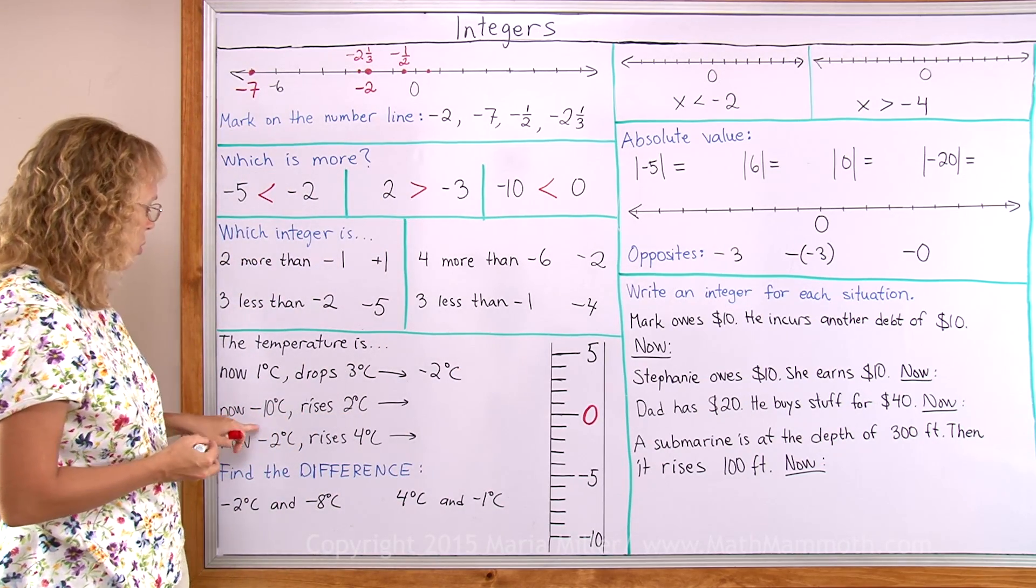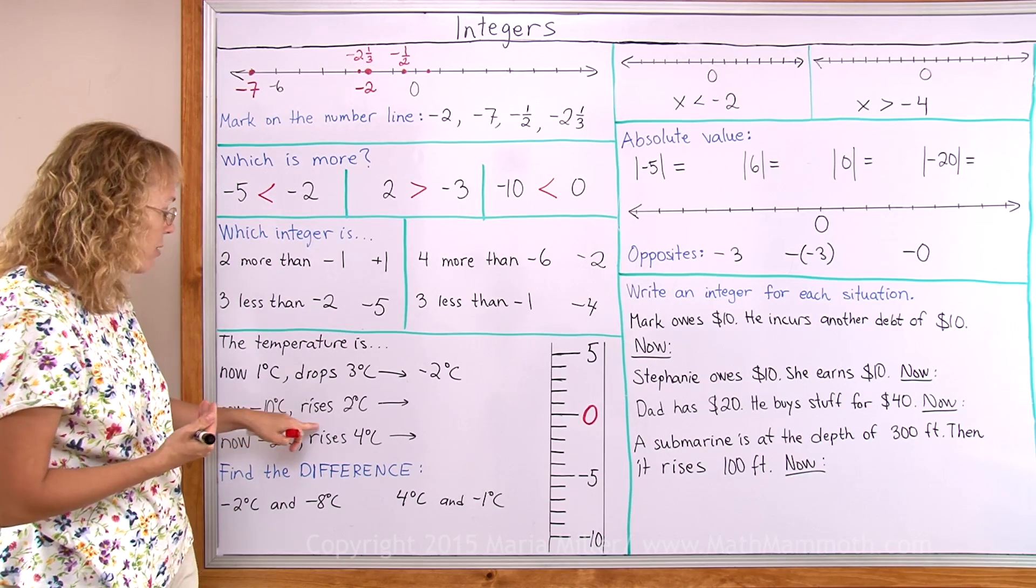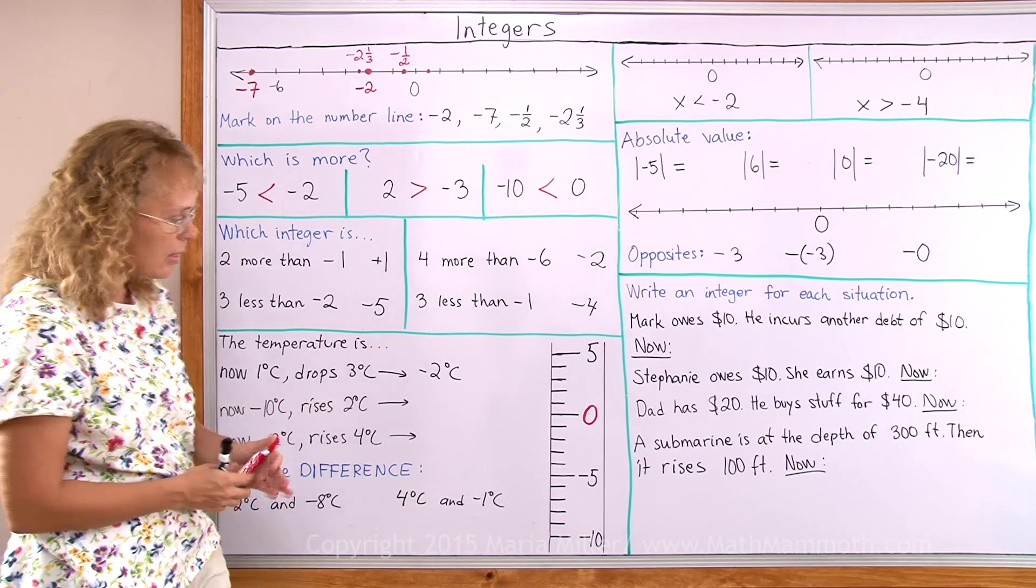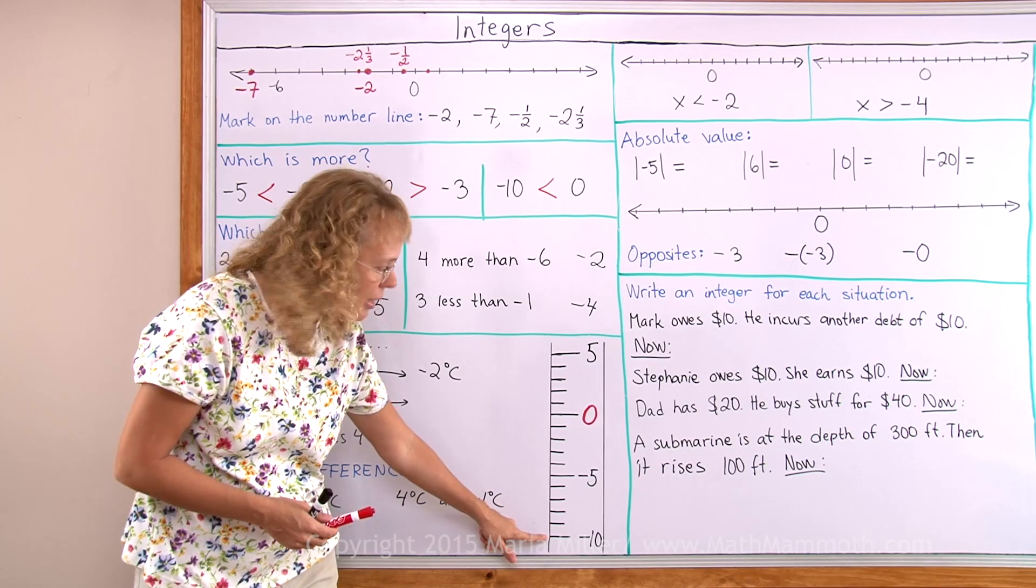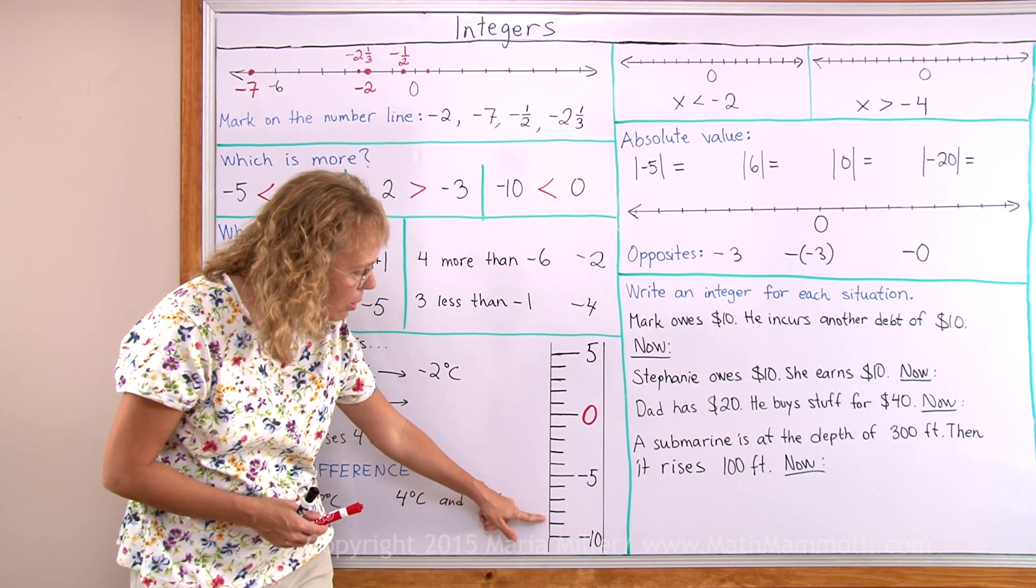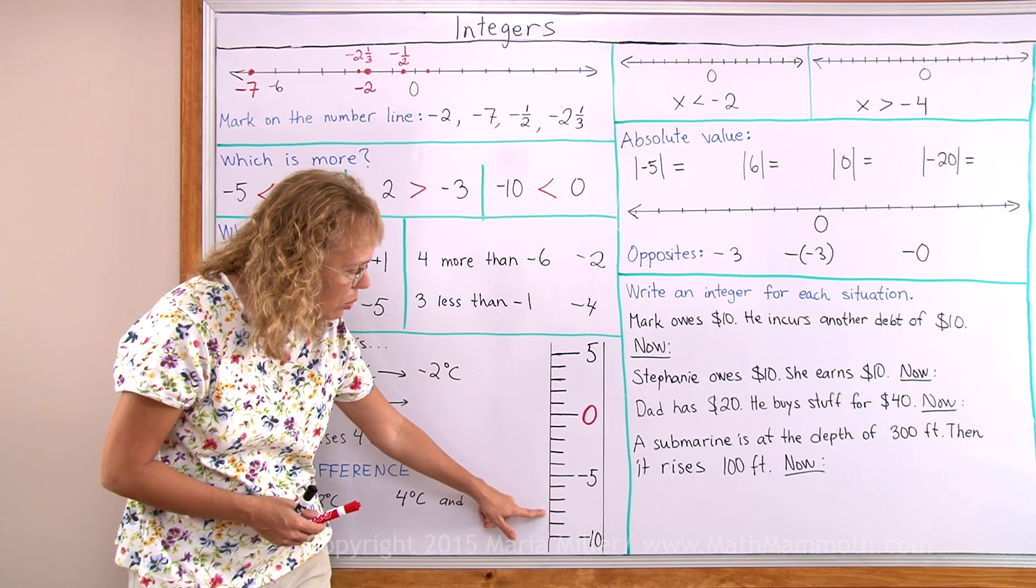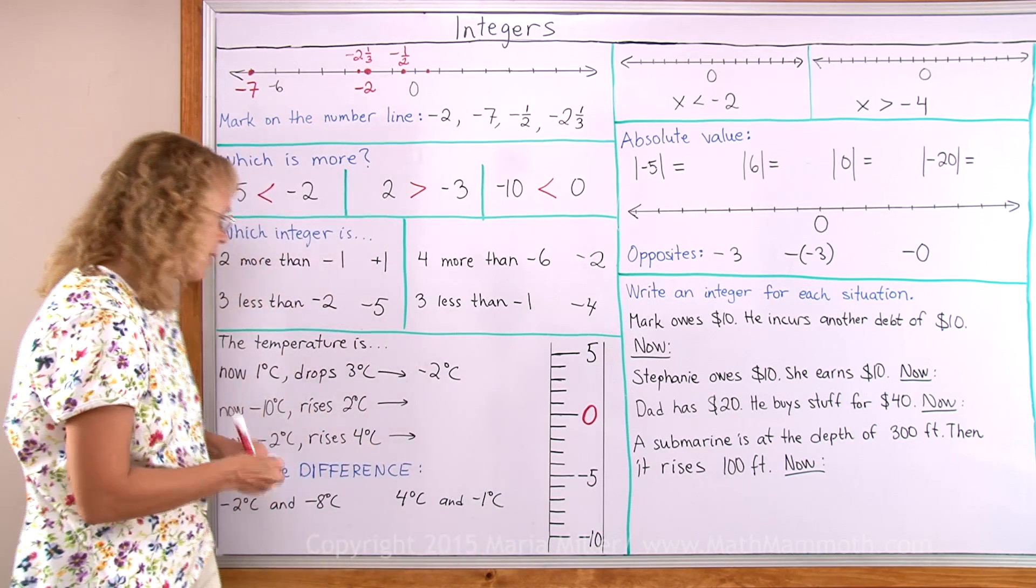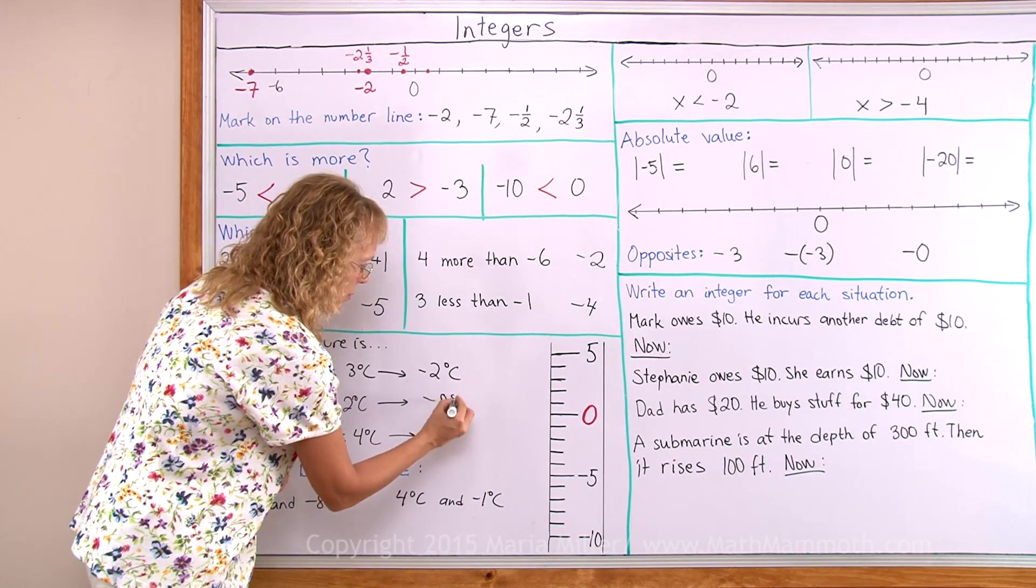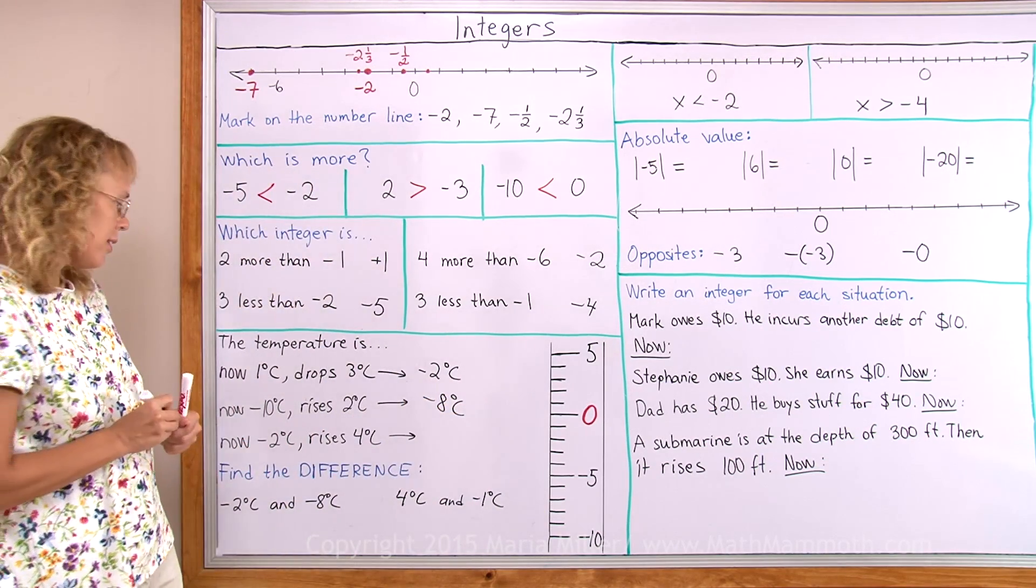If it is now minus 10 degrees and it rises 2 degrees. Right now it is here. Minus 10 degrees. It rises. It gets towards the warmer. Comes up 2 degrees. Then this is negative 8. Or minus 8 degrees.